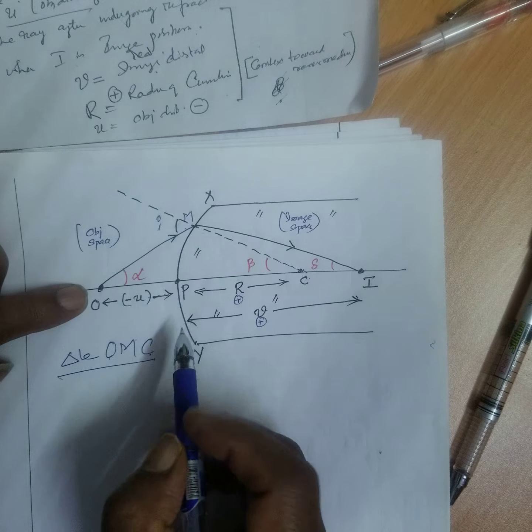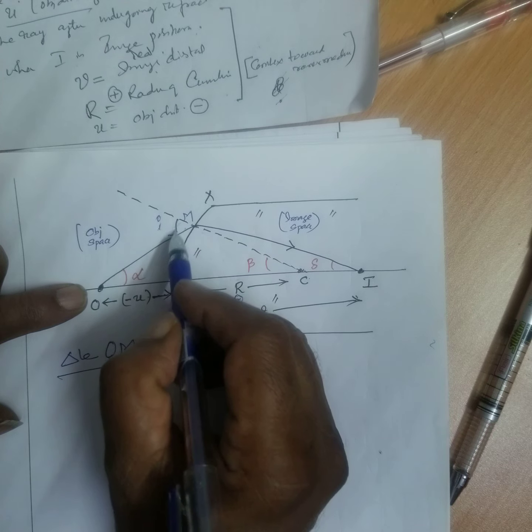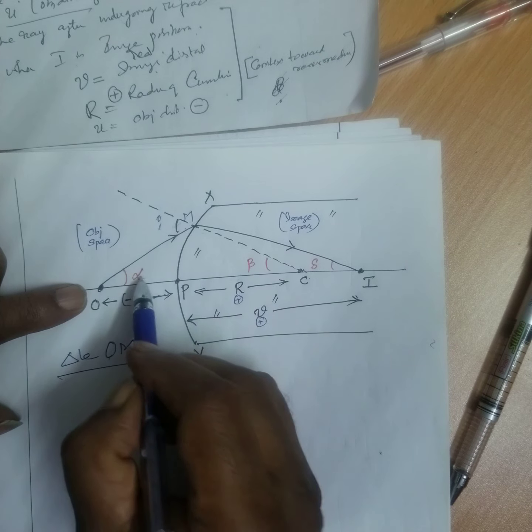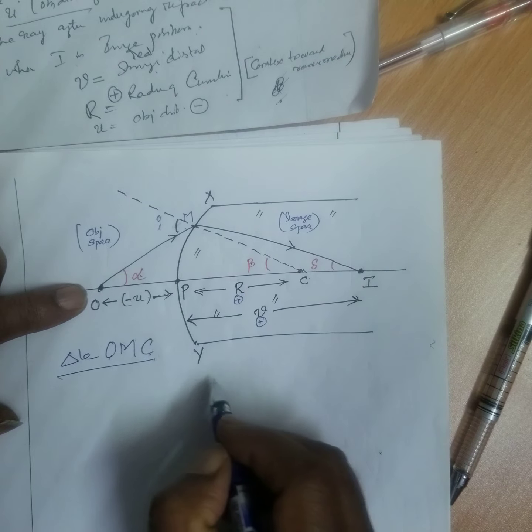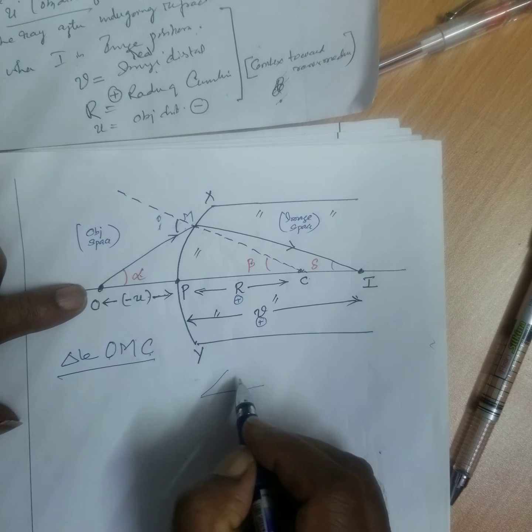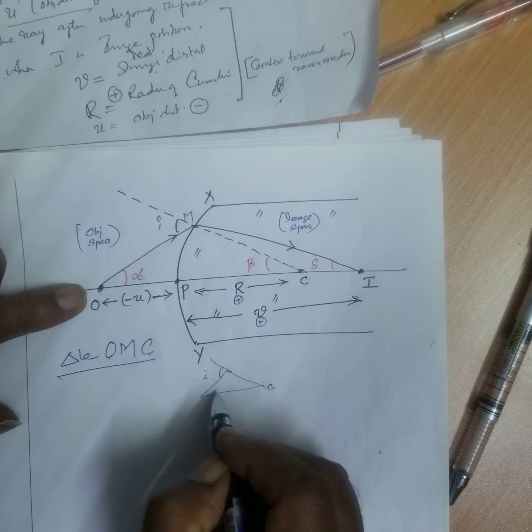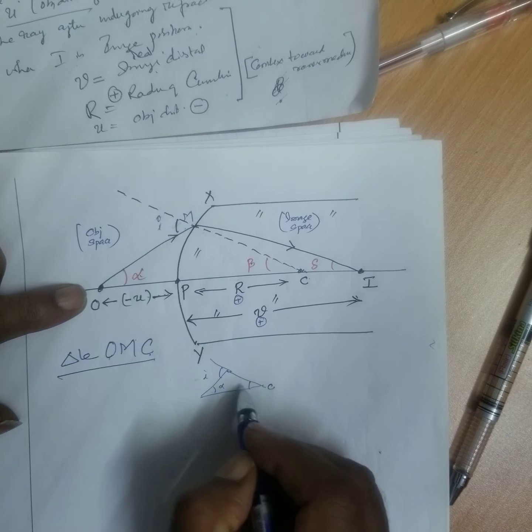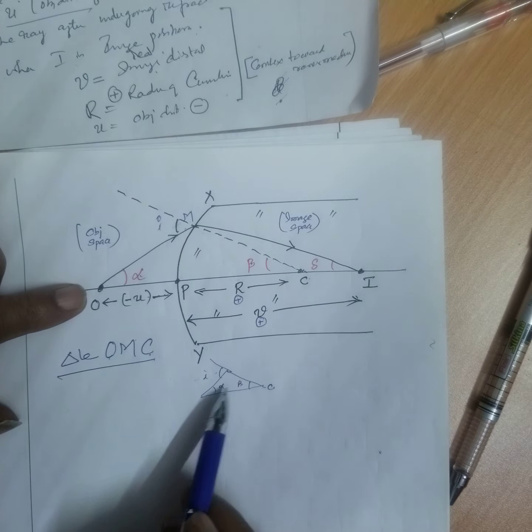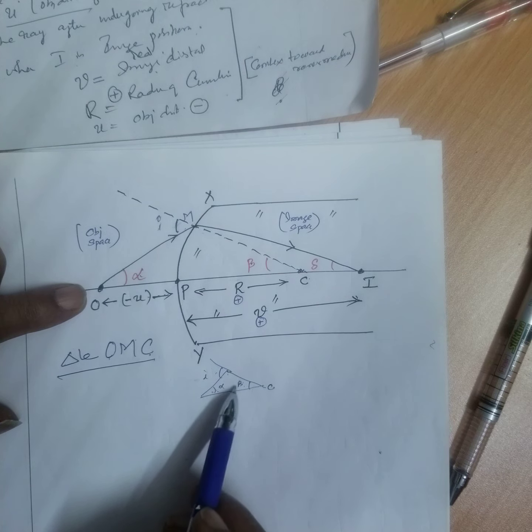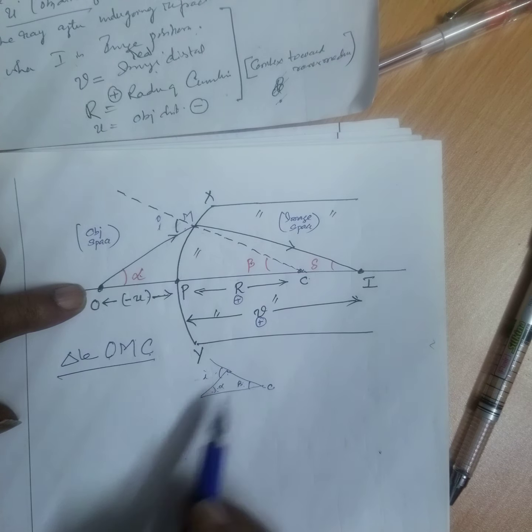From triangle OMC, see, this is an exterior angle. I is equal to alpha plus beta, is it not? From this triangle C, this is I, this is alpha, this is beta. Exterior angle sum of the opposite interior angle.